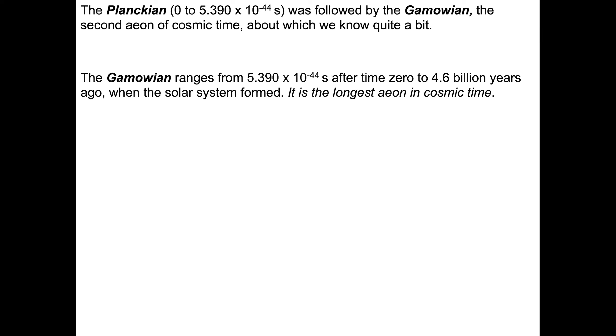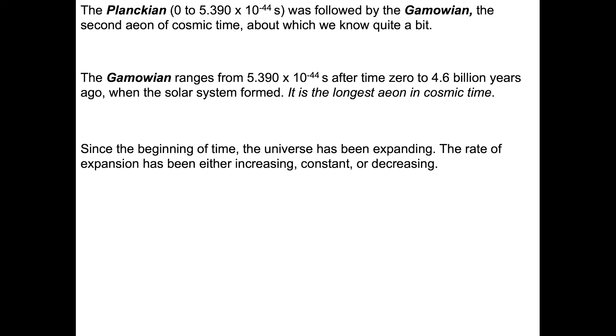The Planckian was followed by the Gamowian — the second eon of cosmic time, about which we know quite a bit. The Gamowian ranges from the end of the Planckian to 4.6 billion years ago, when the solar system formed. It's the longest eon in cosmic time. Since the beginning of time, the universe has been expanding, and the rate of expansion has either been increasing, constant, or decreasing.